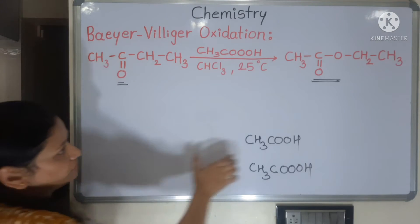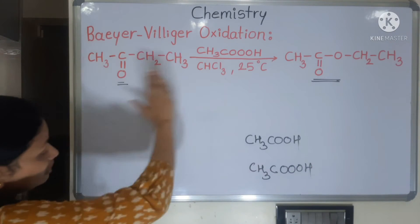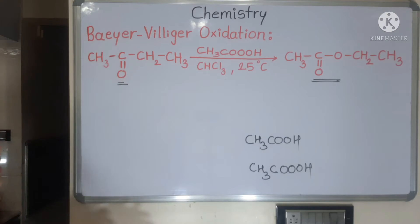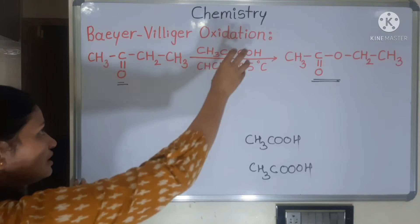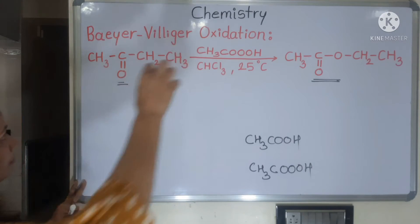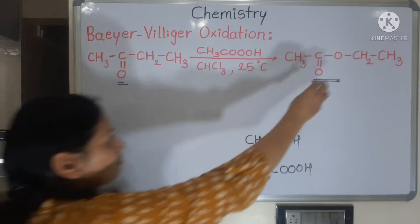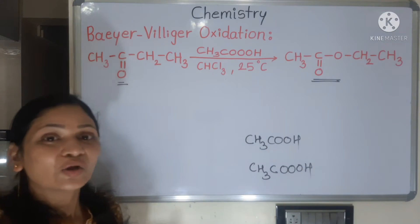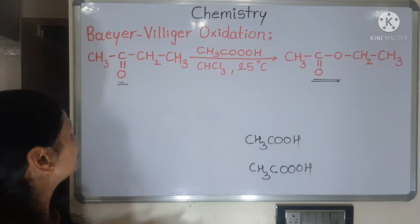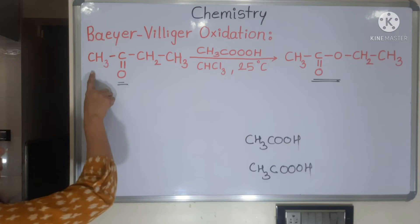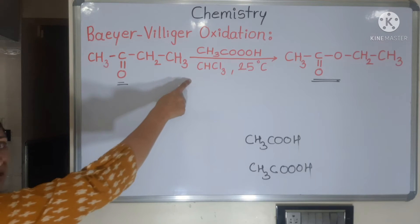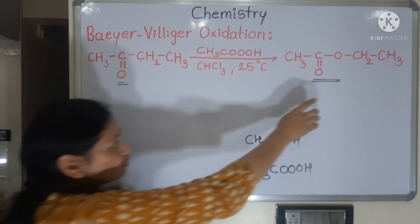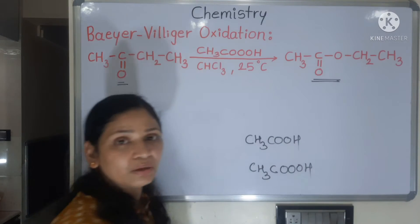If you look at the reaction carefully, you can see there is one extra oxygen — we take out that extra oxygen and insert it next to the carbonyl group. The important thing is on which side we insert it. Look here: we have CH3 on one side and CH2CH3 on the other side — it can go on either side, but in the product we see it goes next to the bulkier group.